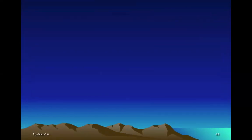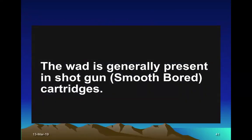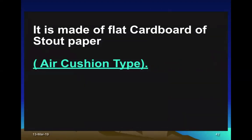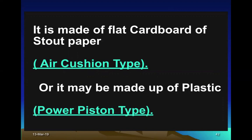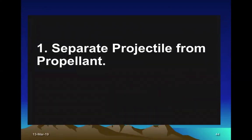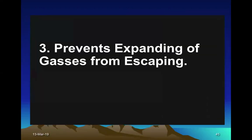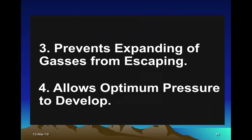Wads are generally present in shotguns or smoothbore cartridges. They are made of cardboard or stout paper (air cushion type) or plastic (power piston type). The functions of the wad are: it separates the projectile from the propellant, seals the bore effectively, prevents propellant gases from escaping, and allows optimum pressure to develop to push the projectile.